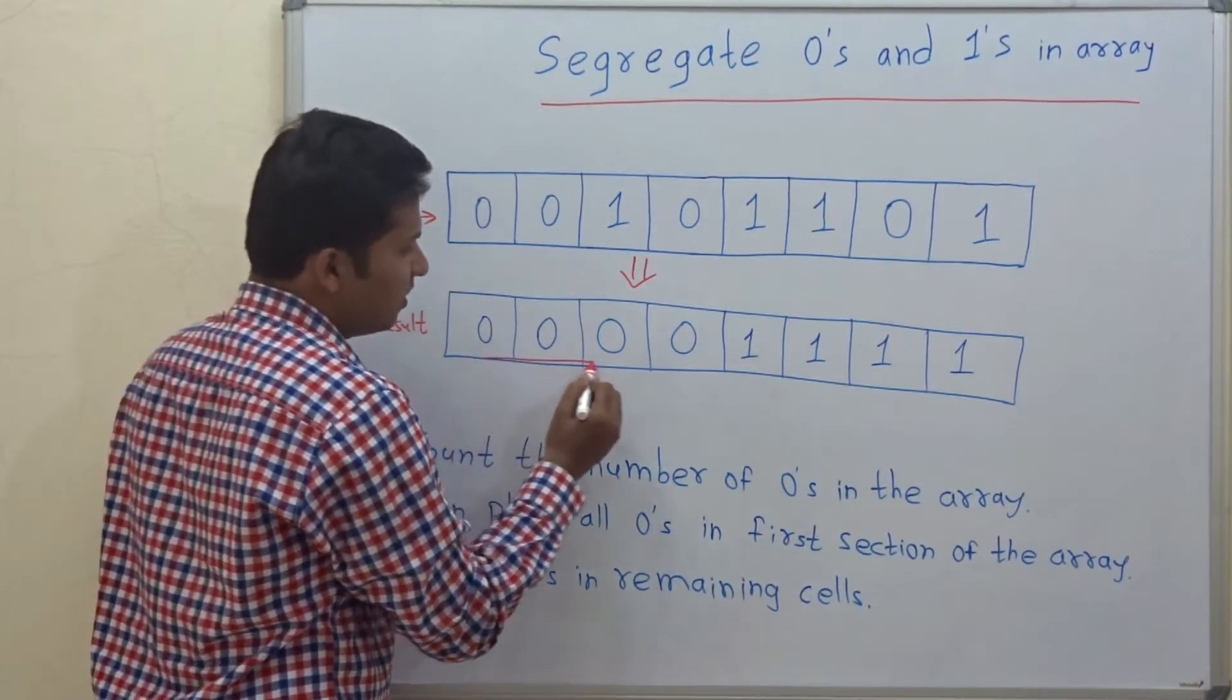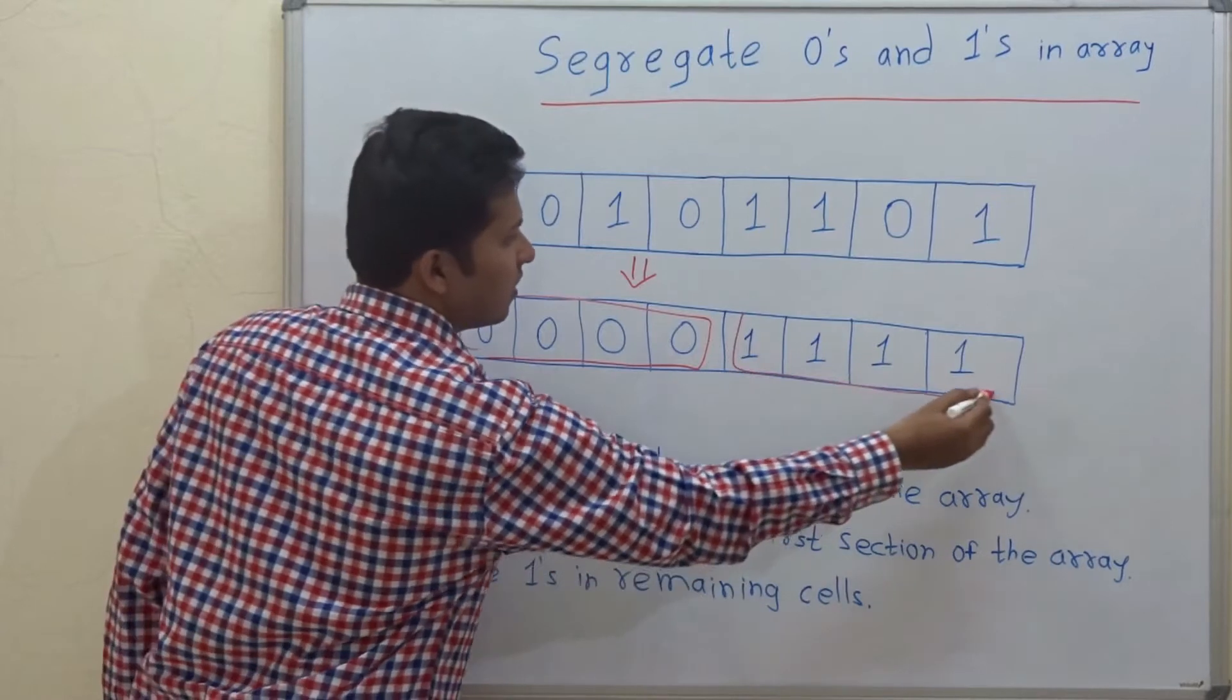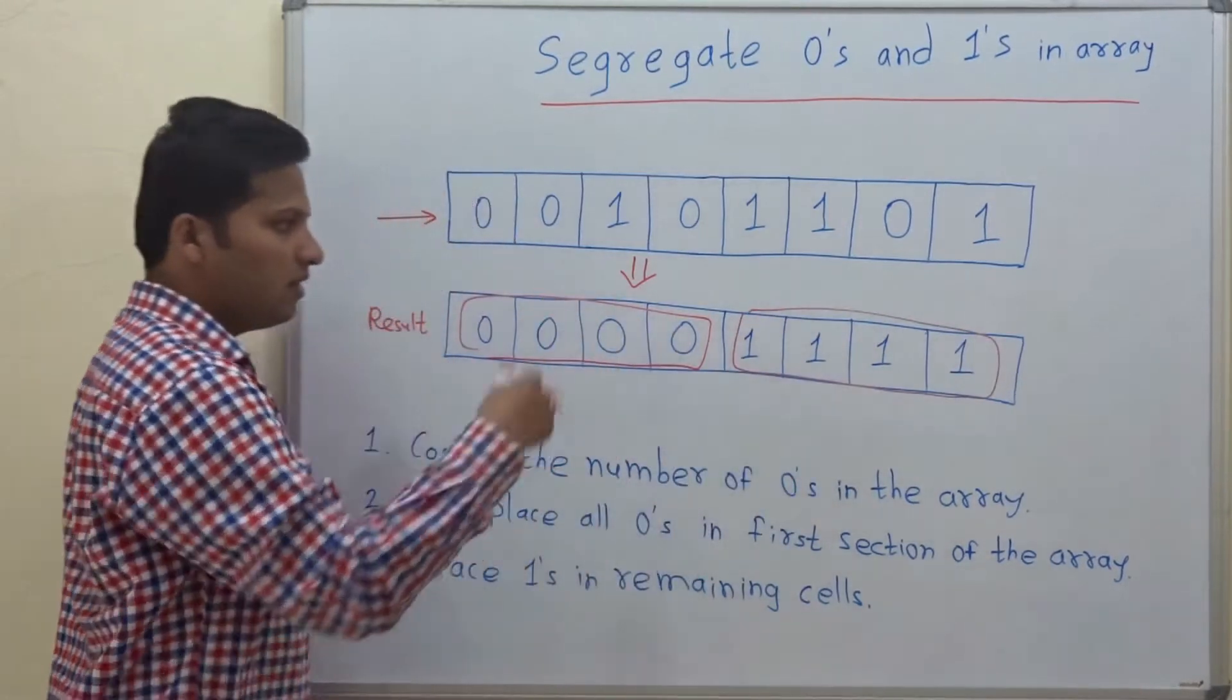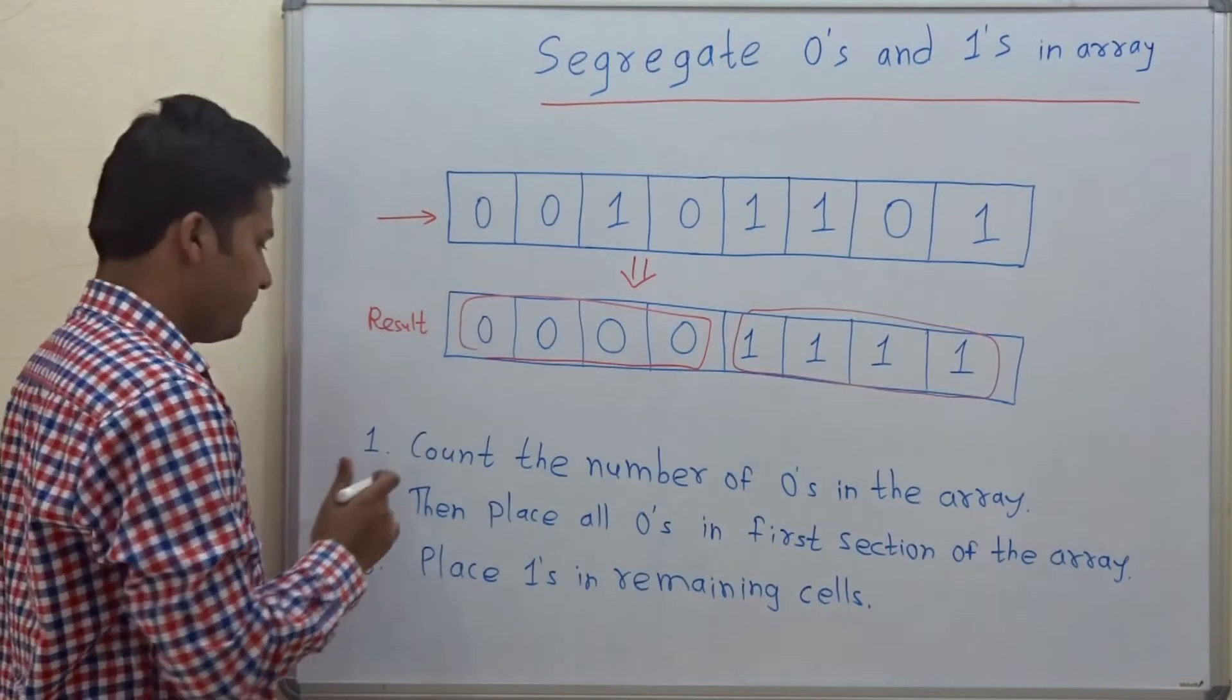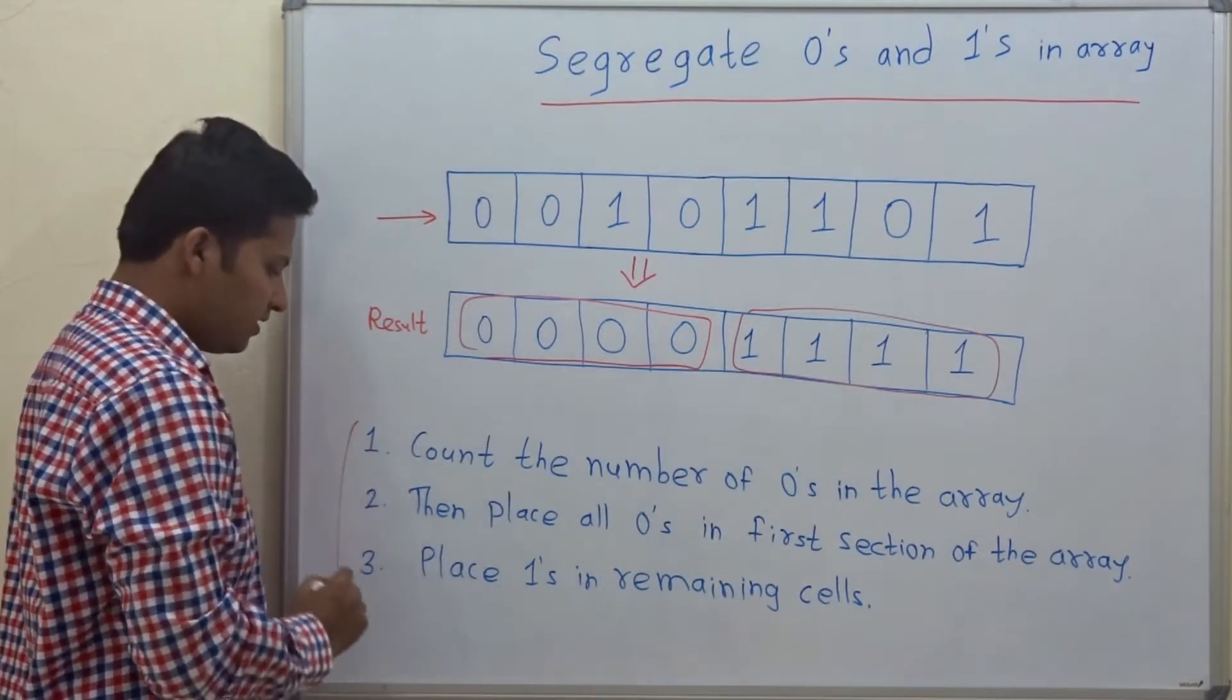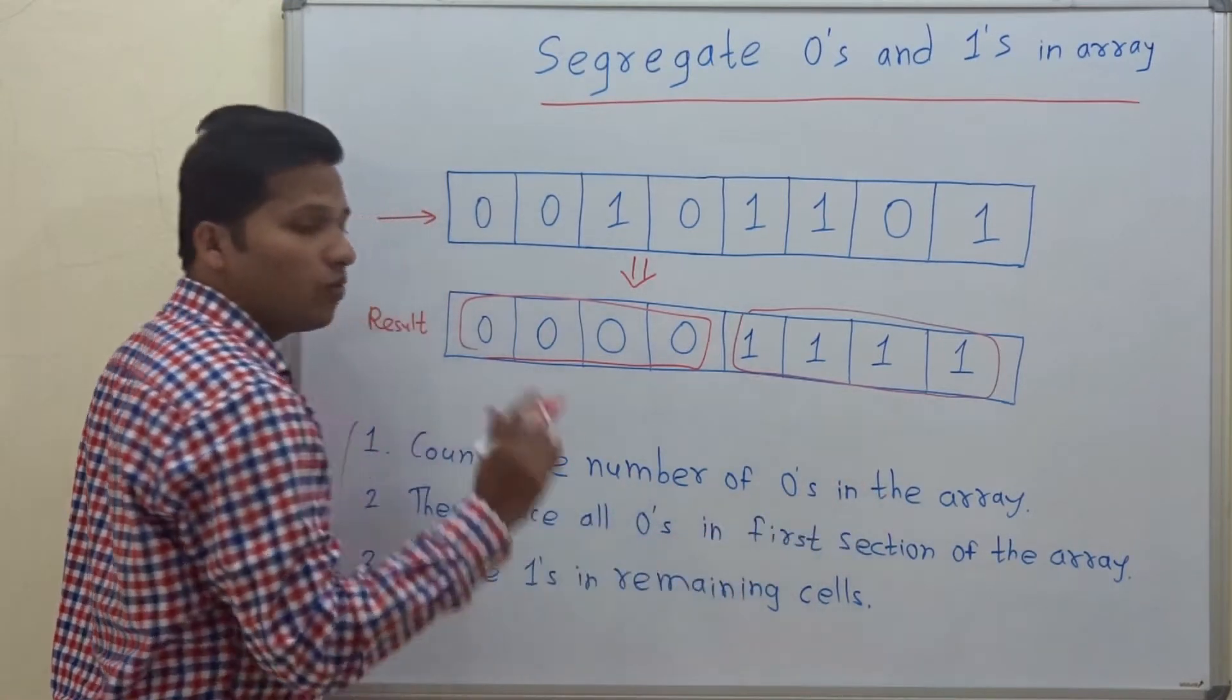All the zeros should be segregated and ones should be segregated at the other part of the array. Now let's see how to do this. So the steps are written here. First you have to count the number of zeros in the original array.